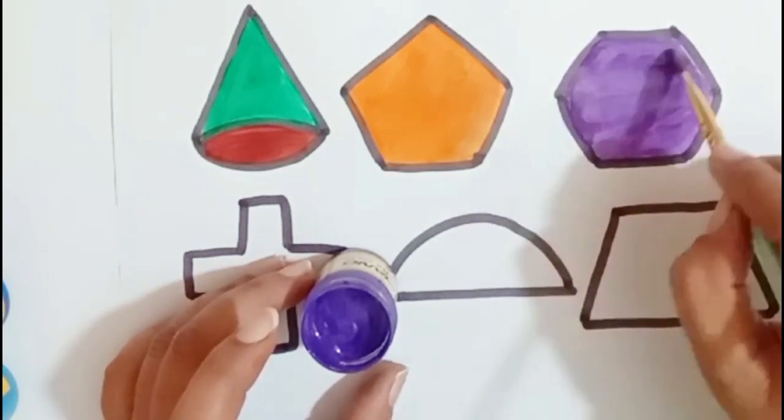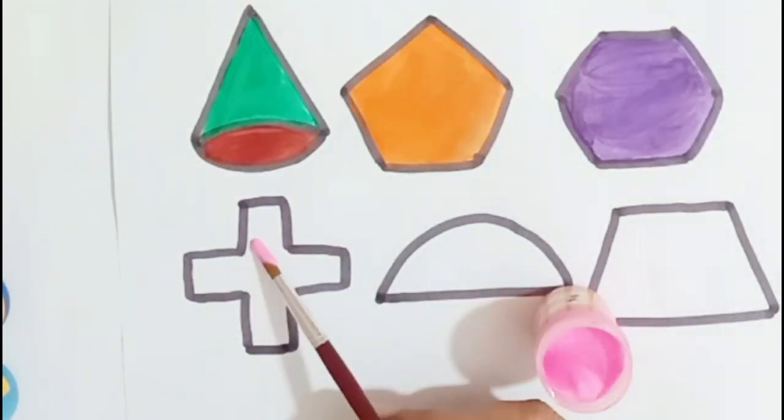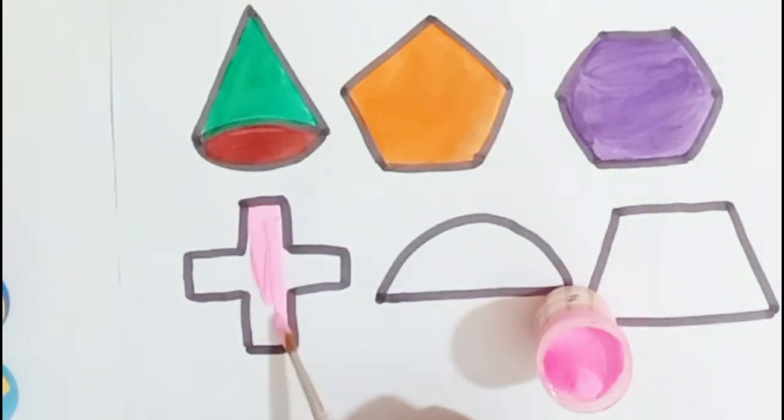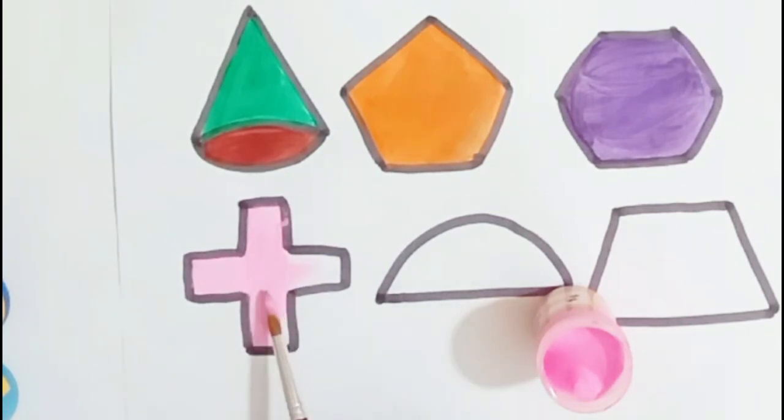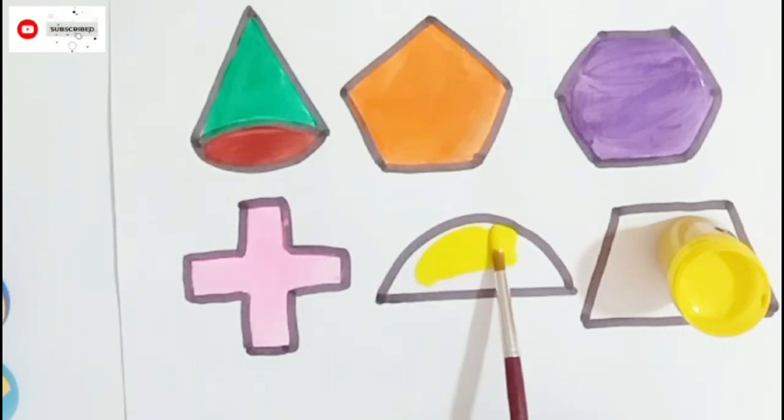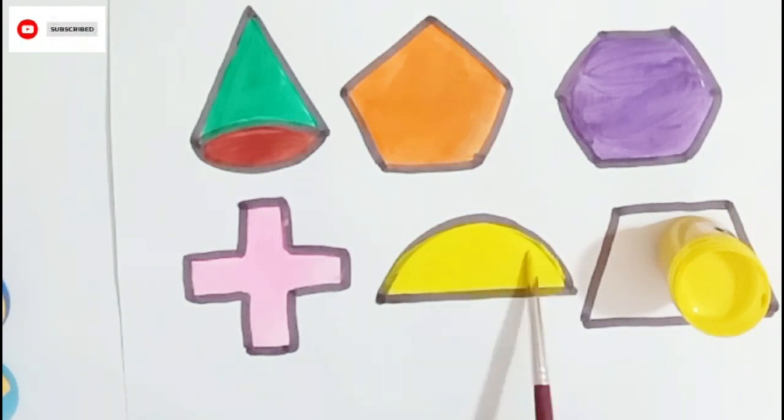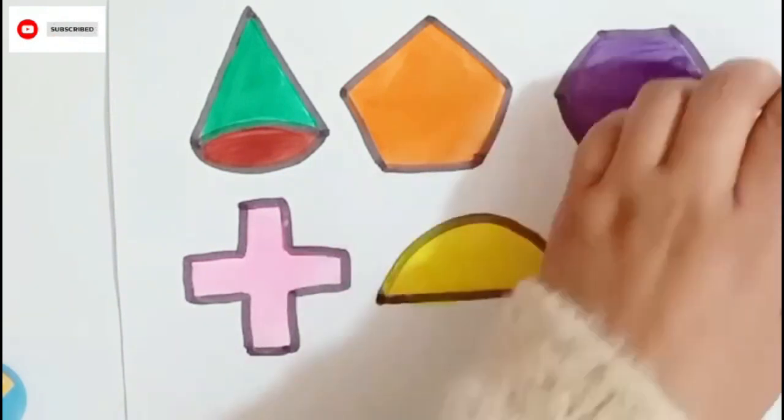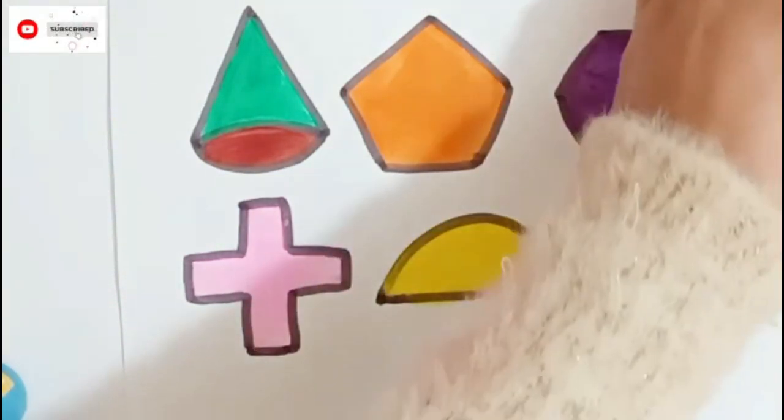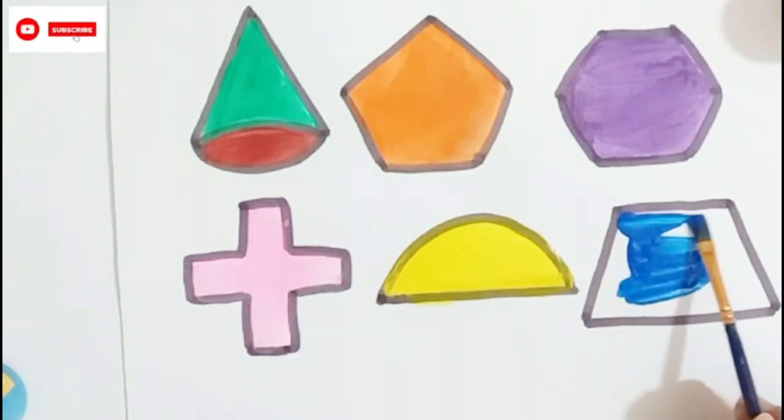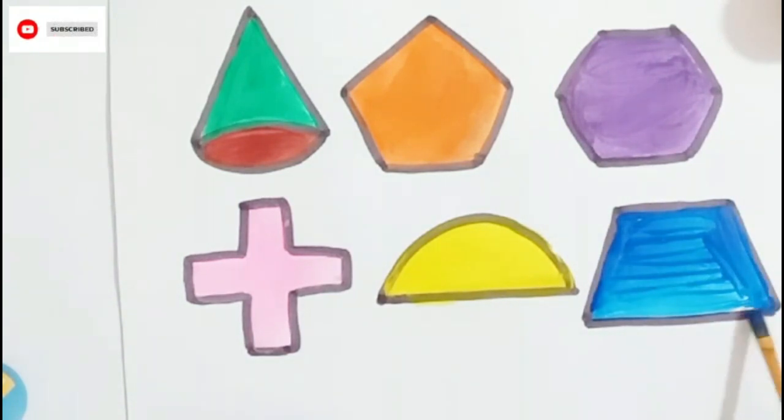Hexagon, pink color. Cross, yellow color. Semicircle, dark blue color. Trapezoid.